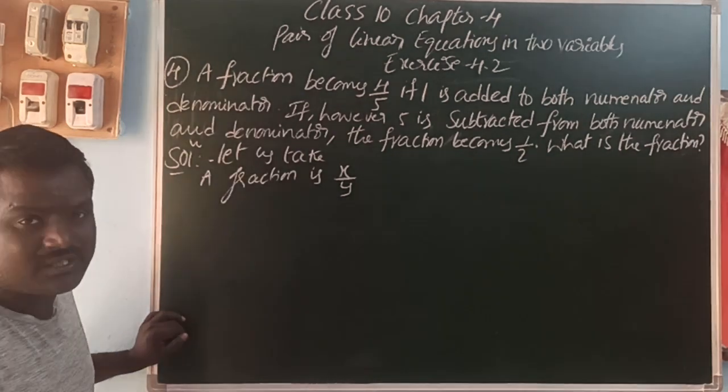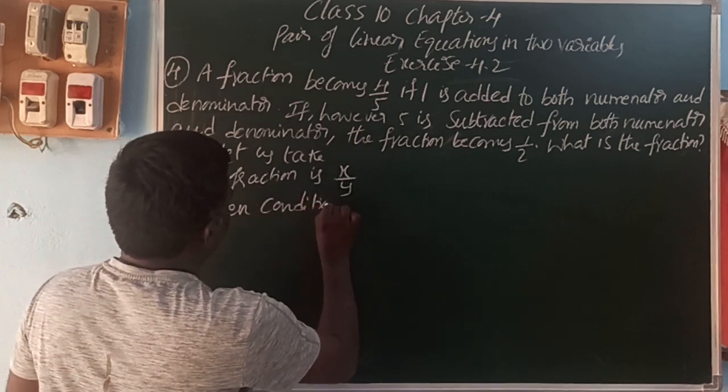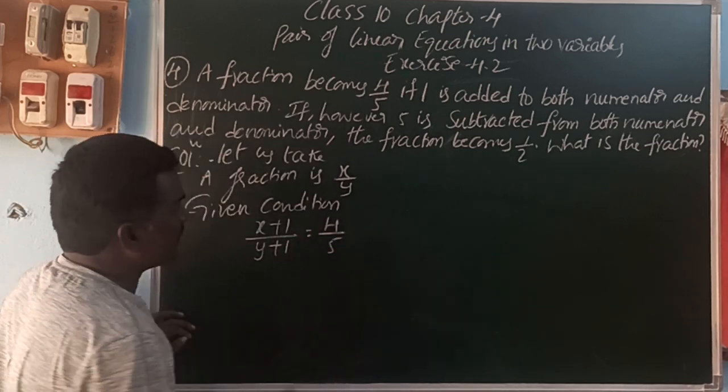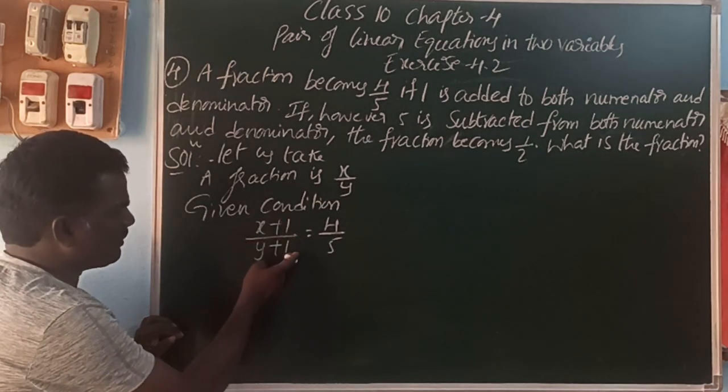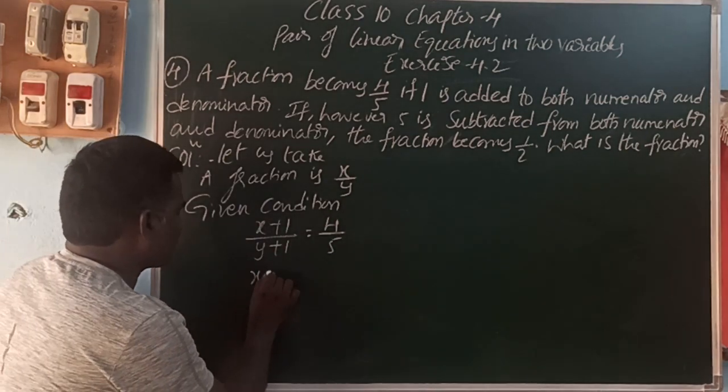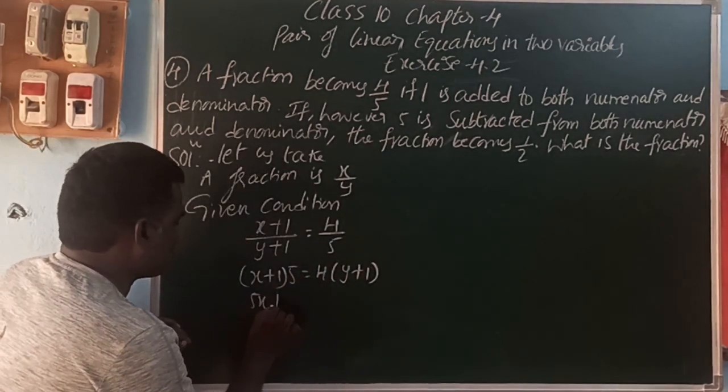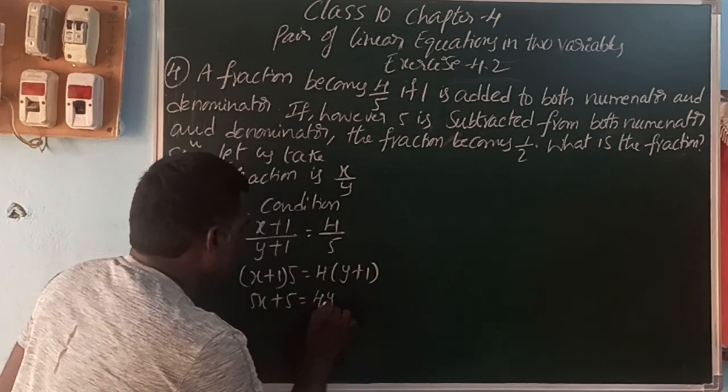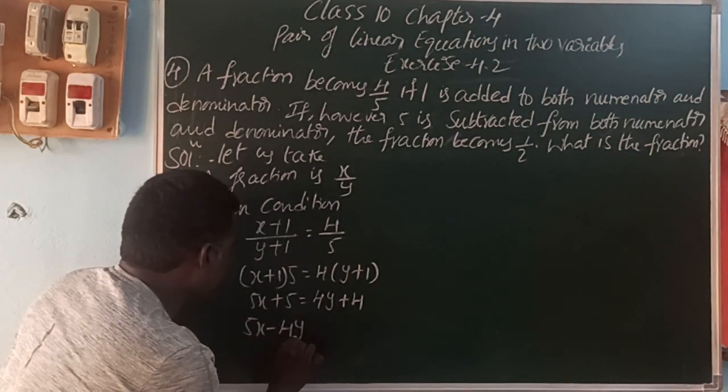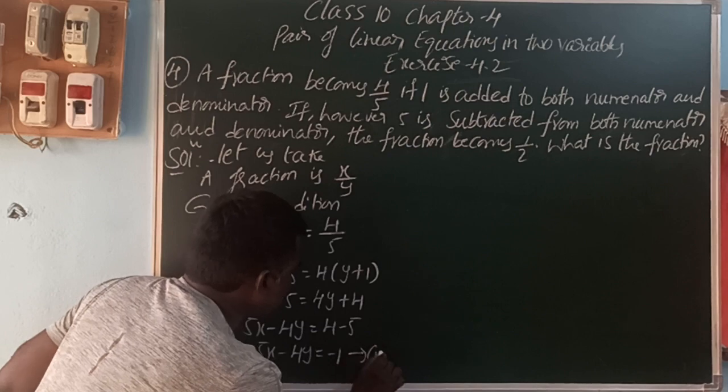So, 1 is added to both numerator and denominator. Given condition, 1 is added to both numerator and denominator, then the fraction becomes 4 by 5. Cross multiply. So, x plus 1 into 5 is equal to 4 of y plus 1. So, 5x plus 5 is equal to 4y plus 4. Take the variables one side, constants one side. So, 5x minus 4y is equal to 4 minus 5. 5x minus 4y is equal to minus 1. This is equation 1.